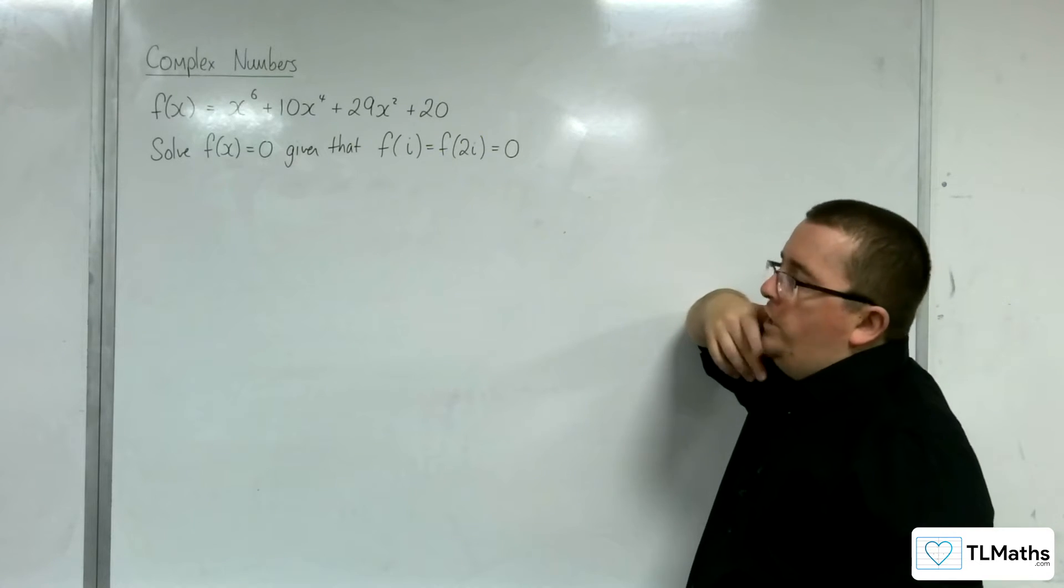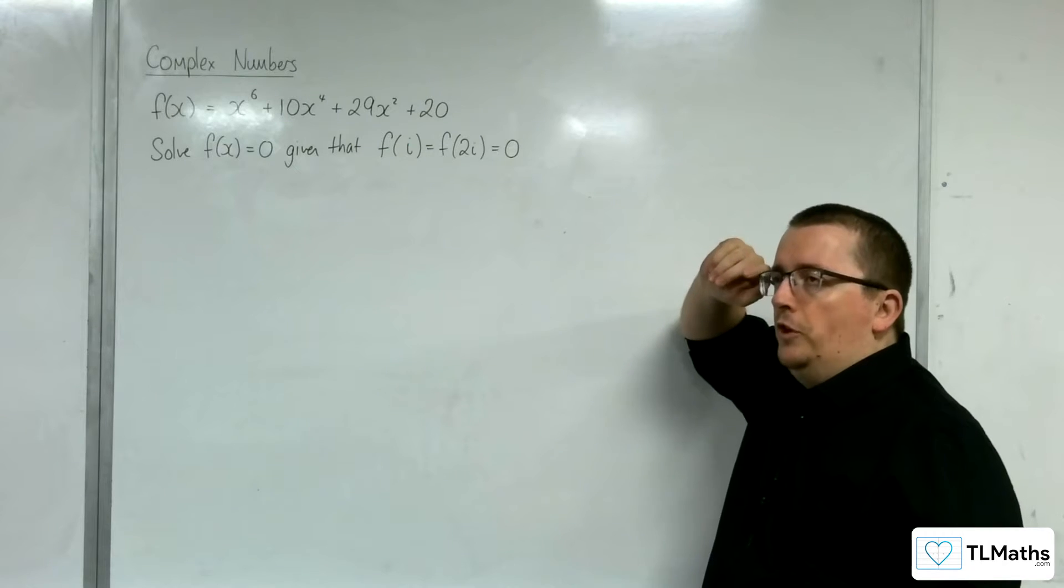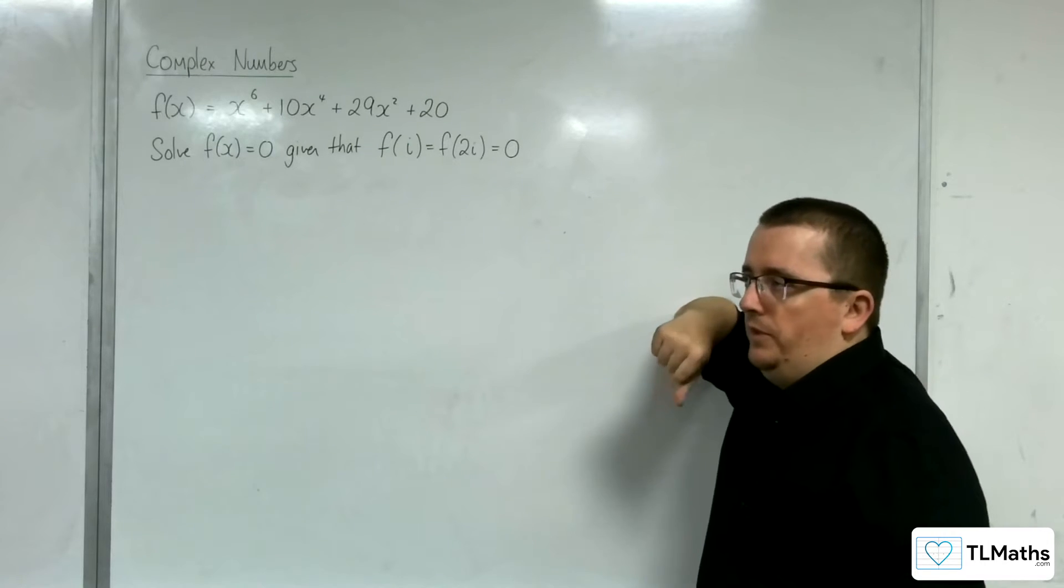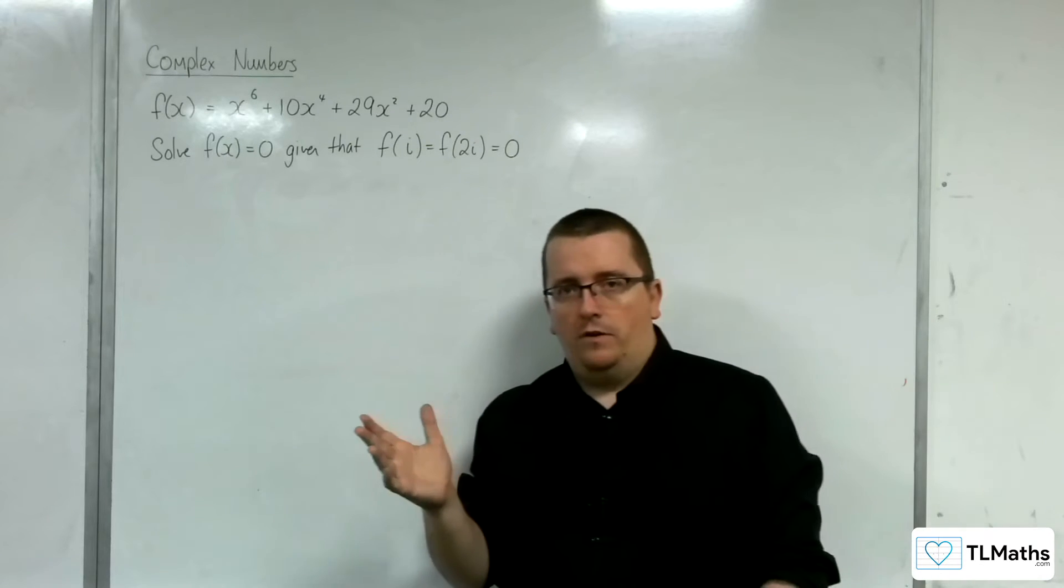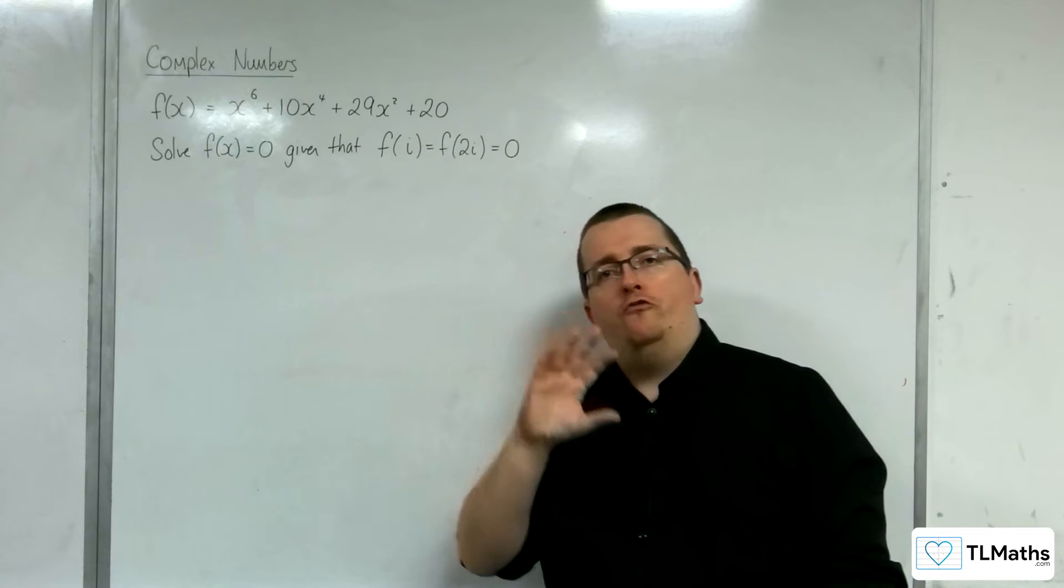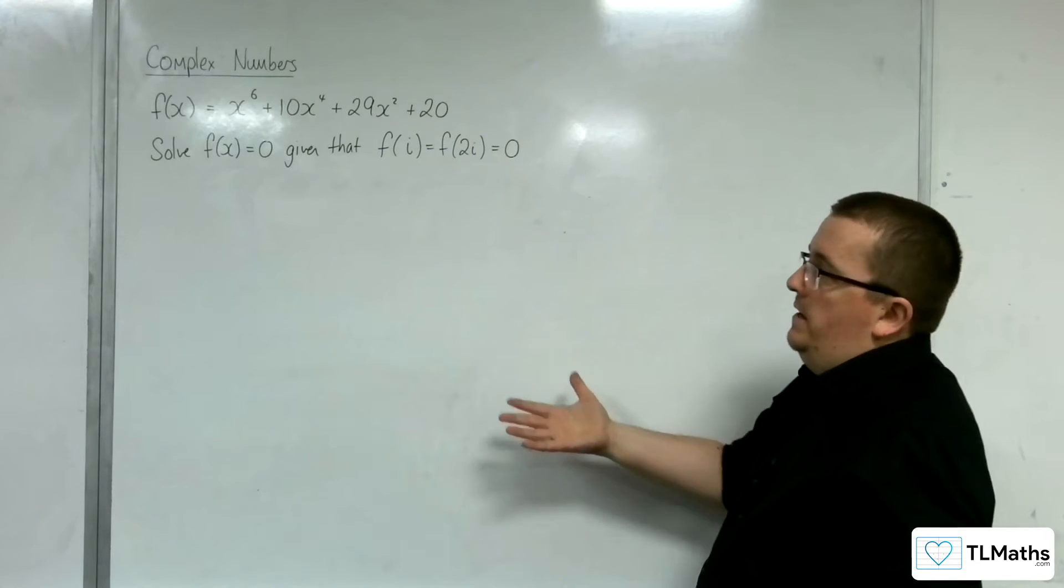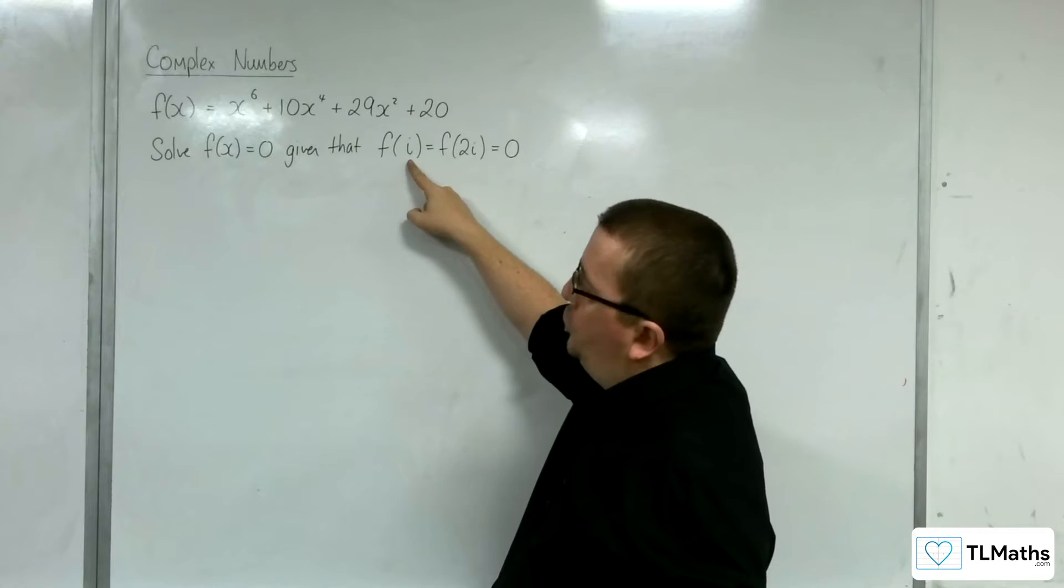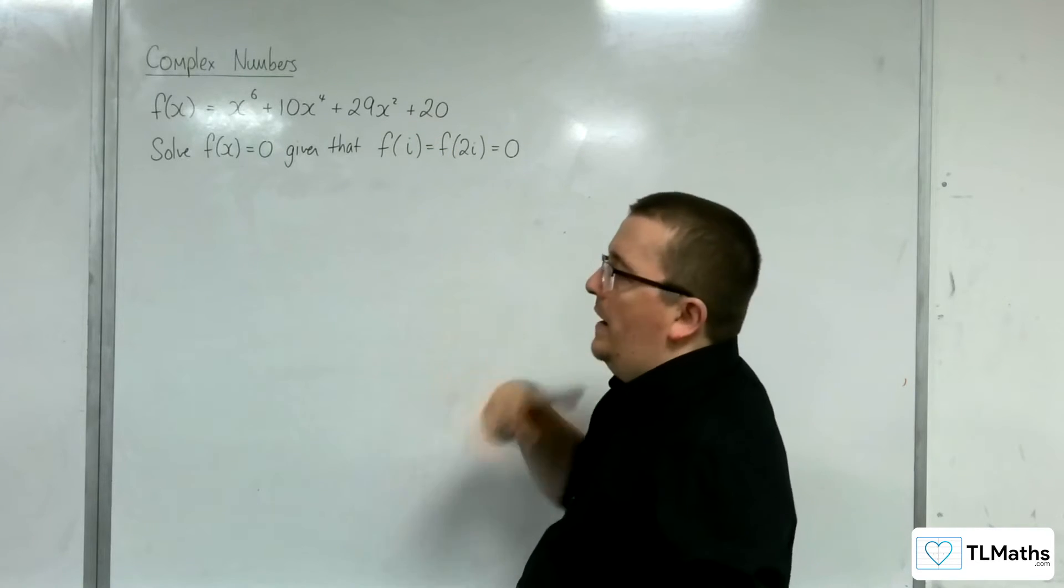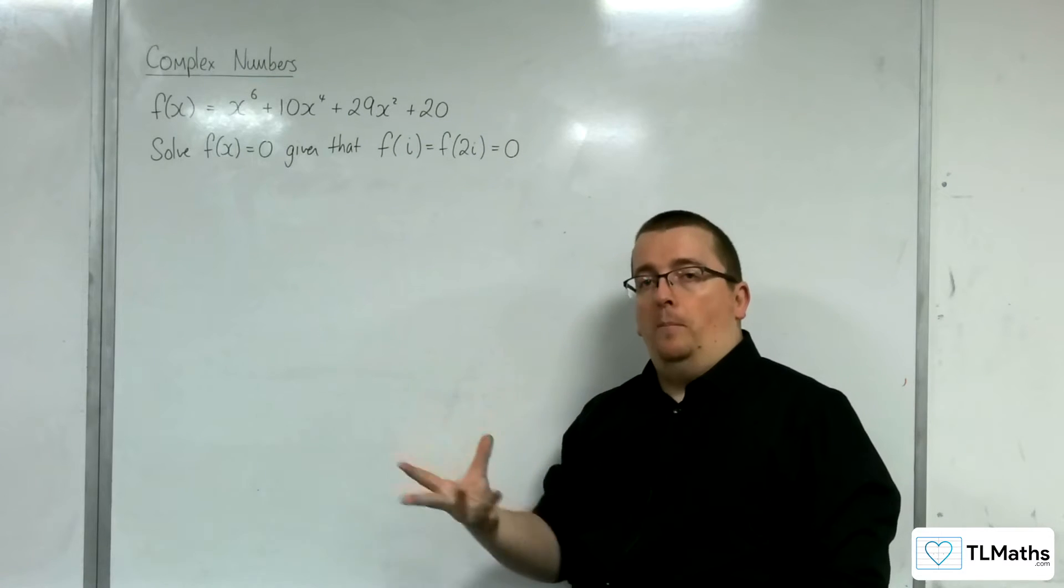Now, what you need to get from here is that there is something called the complex conjugate root theorem. Now, we're going to look at this in more detail later on. But the complex conjugate root theorem says that if i, in this case, is a root, or rather is a solution to this equation, that means that minus i is also a solution, the complex conjugate.